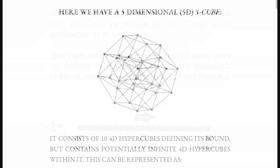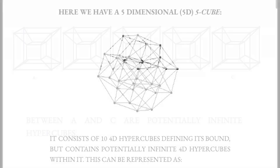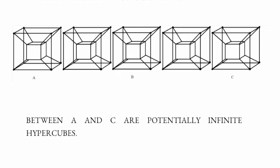Here we have a five dimensional five-cube. It consists of ten four dimensional hypercubes defining its bound, but contains potentially infinite four dimensional hypercubes within it. This can be represented such that between A and C there are potentially infinite hypercubes.